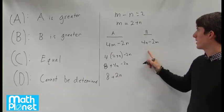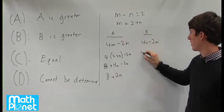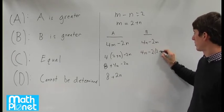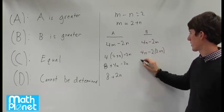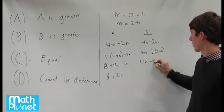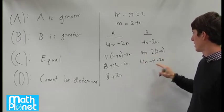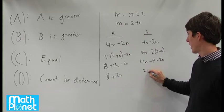Going back to column B, if we plug in m we have 4n minus 2 times (2 plus n). When we expand this out we get 4n minus 4 minus 2n, which simplifies to 2n minus 4.